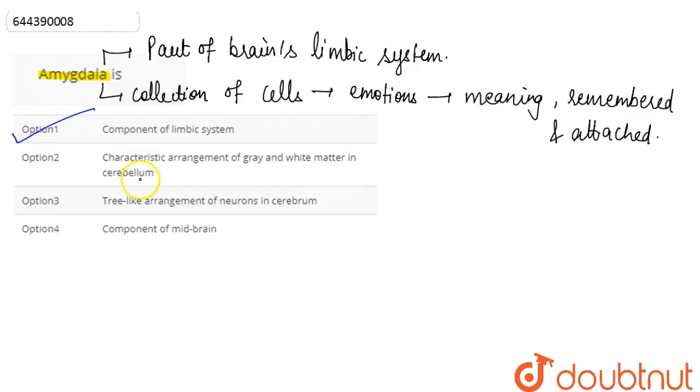Then next we have, it has the characteristic arrangement of gray and white matter in the cerebellum. So this is wrong. It neither has the tree-like arrangement of neurons in the cerebrum. So this is also wrong. And lastly, we have that this is the component of the midbrain. So no, neither the amygdala nor the limbic system is the part of or the component of the midbrain. So this is also wrong here.